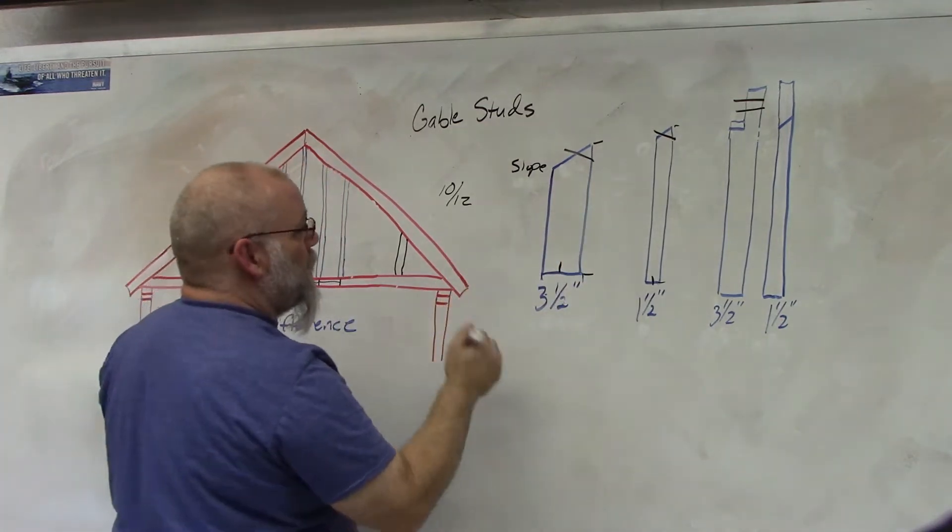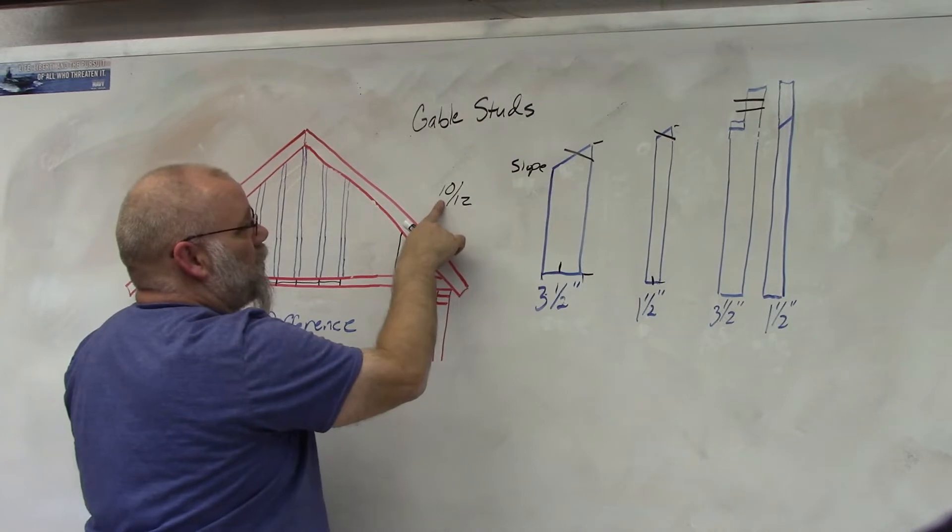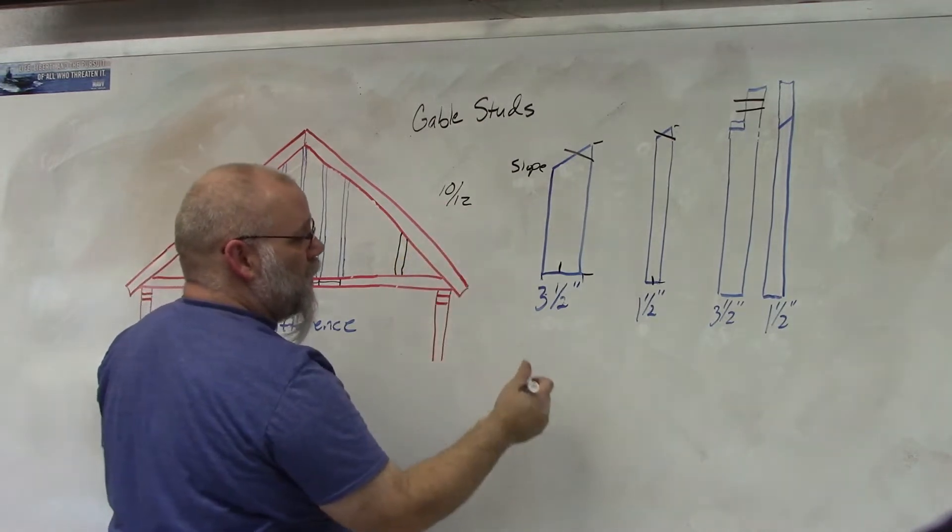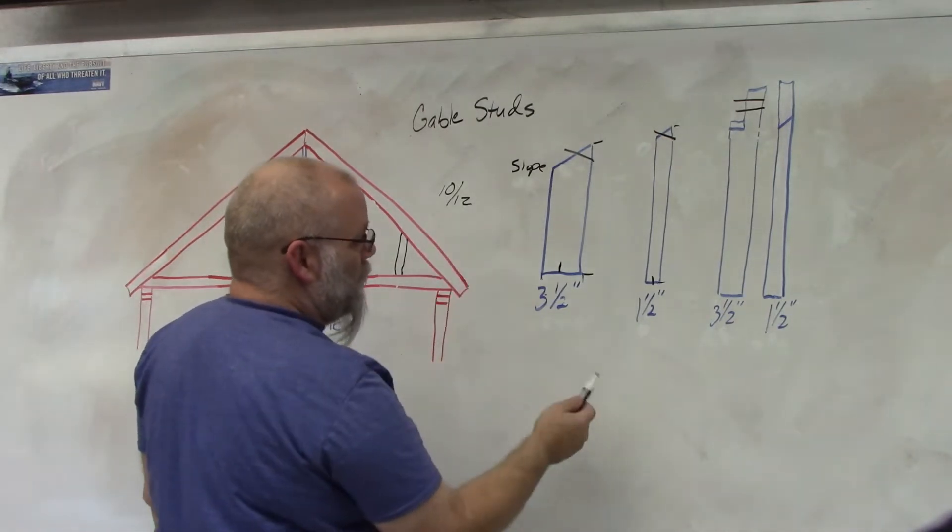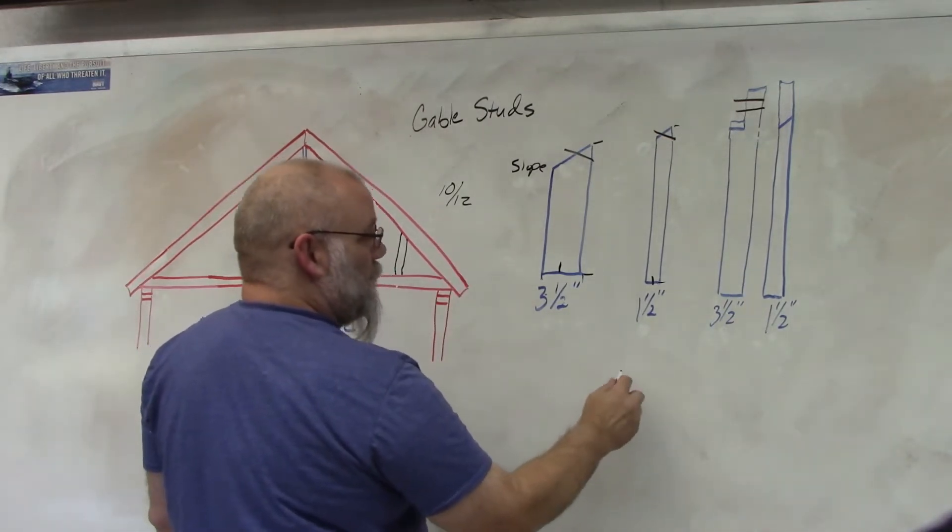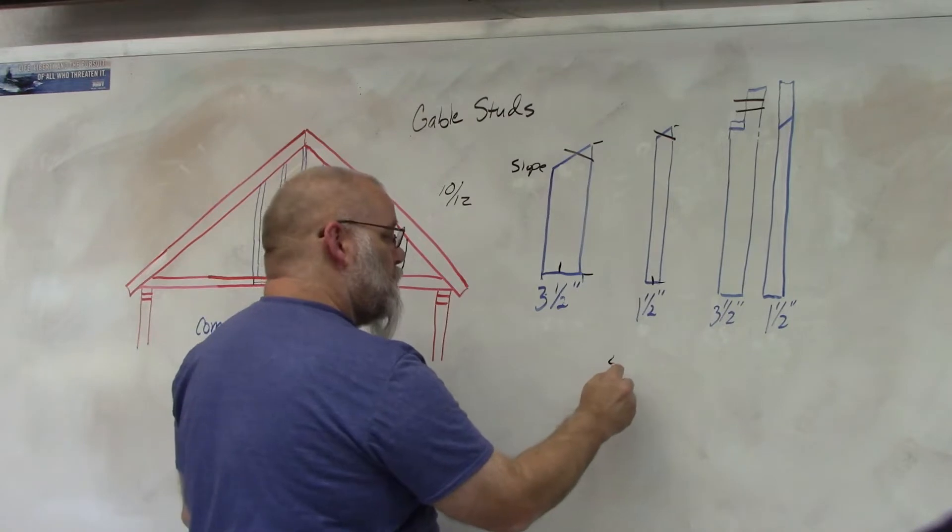Now what angle do you cut the bevel at? Well, you have to convert your 10-12 into degrees. So if you have a framing square, it's pretty easy. You just put it on the 10-12 and then read how many degrees it is. So like a 10-12 would be 40 degrees.